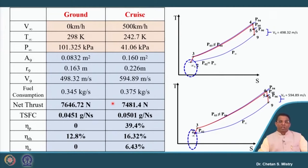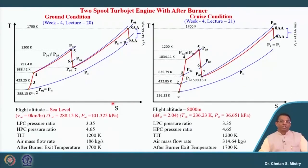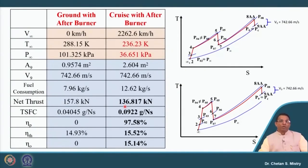We have our propulsive efficiency term that also comes into the picture, and overall efficiency is 6.43 percent. The key observation is that parameters for compressor, turbine entry temperature, and mass flow rate were kept constant. We solved numericals in week 4, lectures 12, 20, and 21 for the same configuration. Here also, comparing ground versus cruise, the amount of thrust generated will be lower and specific fuel consumption will be higher under cruise.